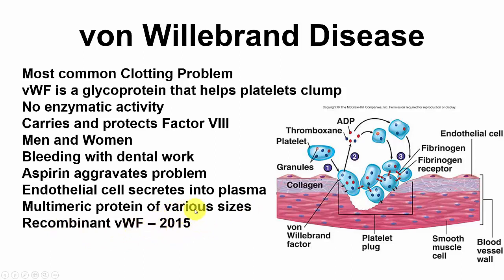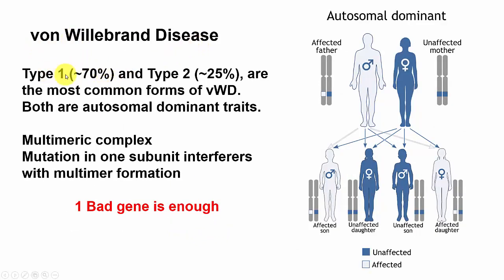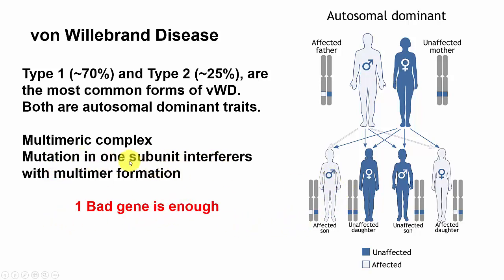Von Willebrand factor is a multimeric protein of various sizes. Recombinant von Willebrand factor was first made in 2015. There are two types of von Willebrand disease: Type 1 and Type 2; Type 1 is the most common. Both are autosomal dominant traits — one bad gene is enough, so half of an affected parent's children will have the problem. A mutation in one subunit interferes with multimer formation.